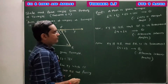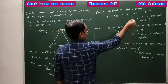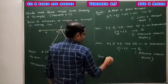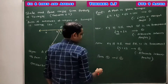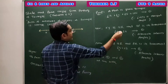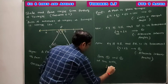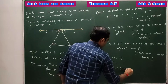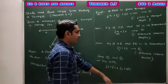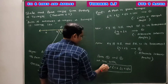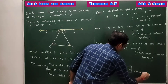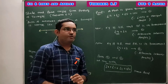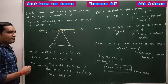From Results 2 and 3, replace angle 4 with angle 2 and angle 5 with angle 3 in Result 1. So: angle 2 + angle 1 + angle 3 = 180°, which gives angle 1 + angle 2 + angle 3 = 180°. Hence proved. The angle sum property of triangle states that the sum of measures of all the angles of a triangle is always 180 degrees.